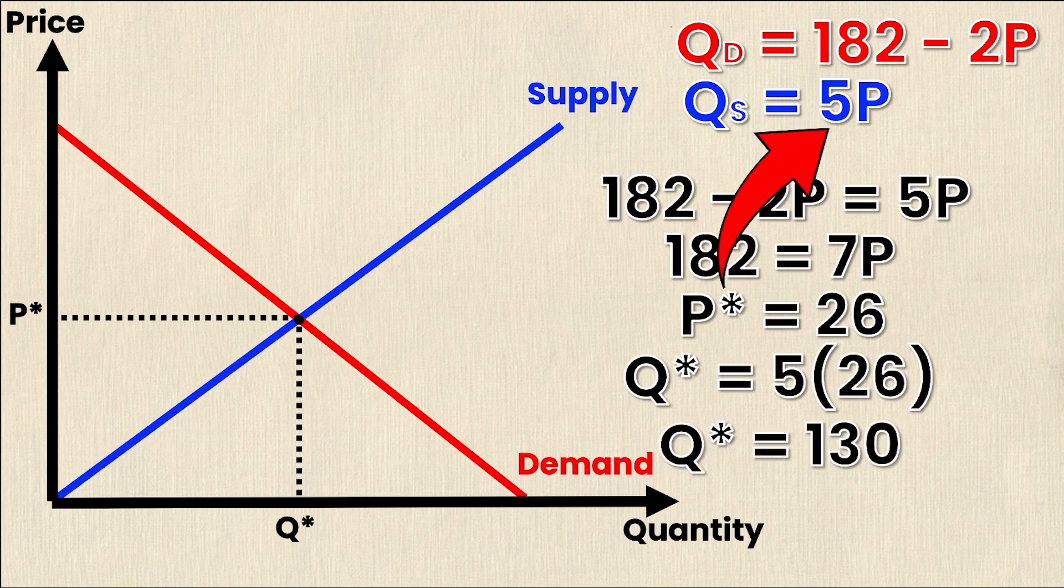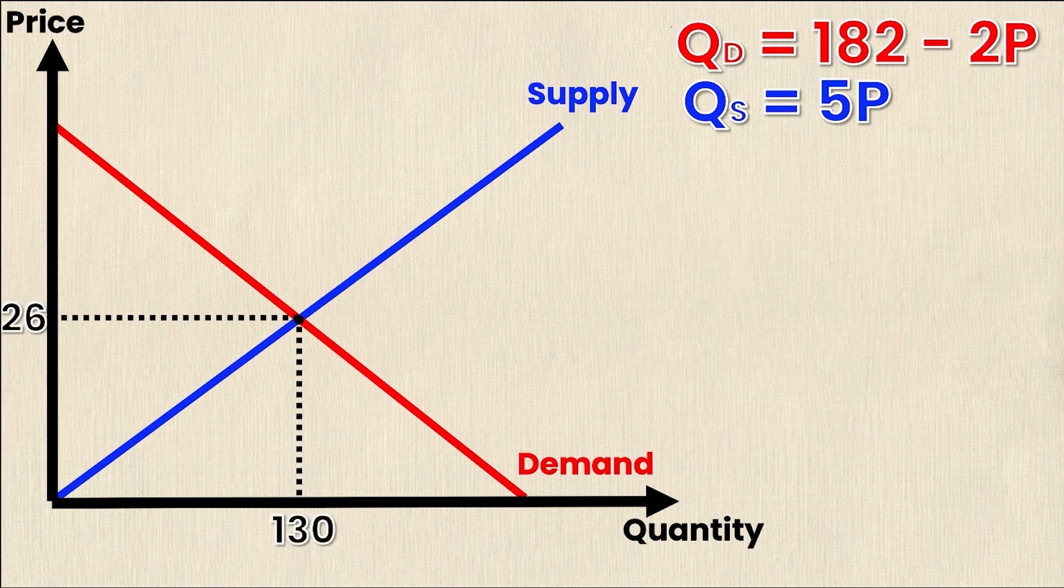Now that I know my equilibrium quantity and my equilibrium price I'm going to put them on my graph and it's going to look something like this.